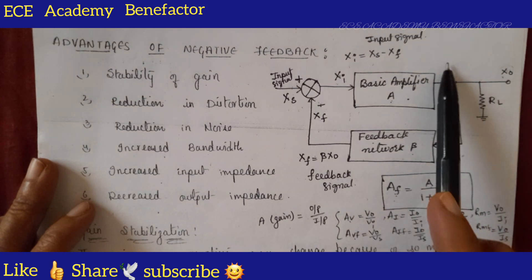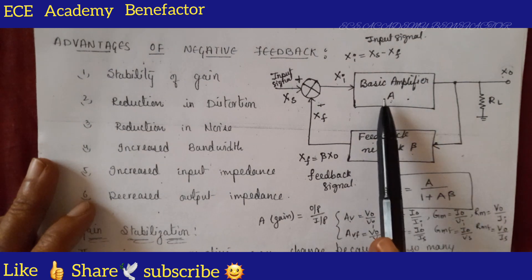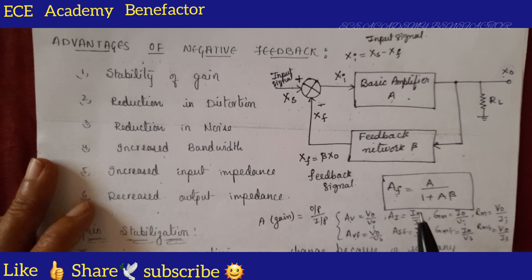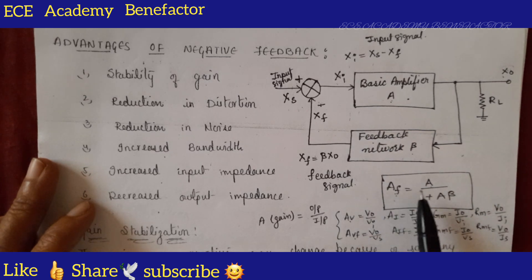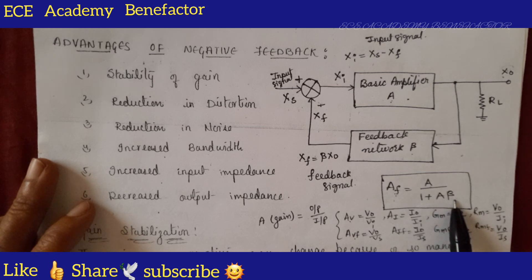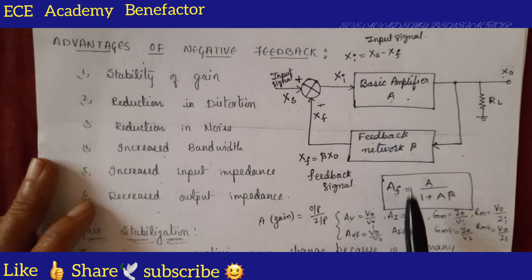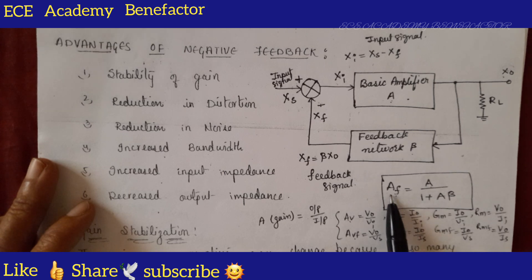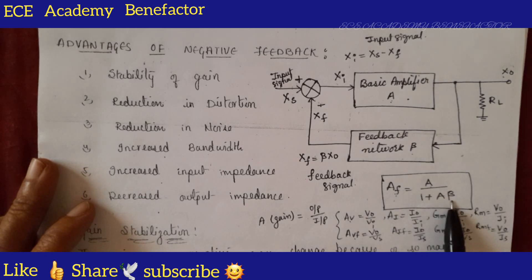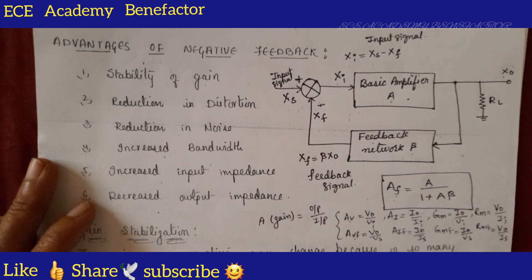The gain equation of negative feedback is: Af is equal to A by 1 plus A·beta. A is the open loop gain, and Af is the closed loop gain. So Af equals A divided by 1 plus A·beta. Now let us see how bandwidth is increased.